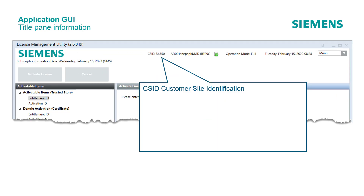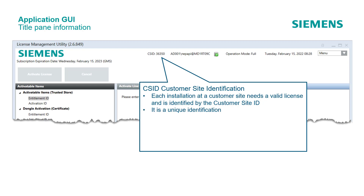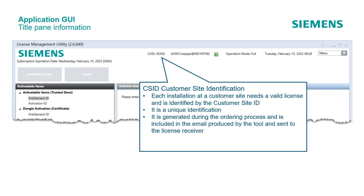The Customer Site Identification — CS ID. Each installation at a customer site needs a valid license and is identified by the customer site ID. It is a unique identification, generated during the ordering process and included in the email produced by the tool and sent to the license receiver. The CS ID is displayed in the tool if the license is enabled and if it forces the CS ID to be displayed.